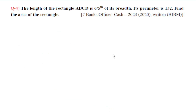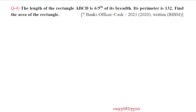Question number 4: The length of rectangle ABCD is 6/5 of its breadth. Its perimeter is 132. Find the area of the rectangle.